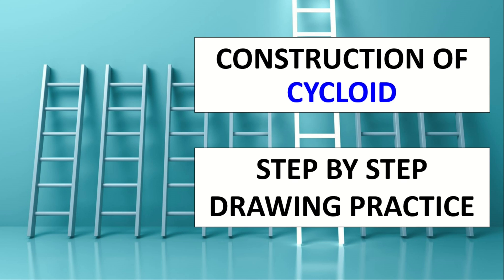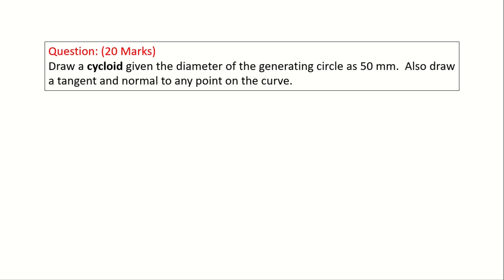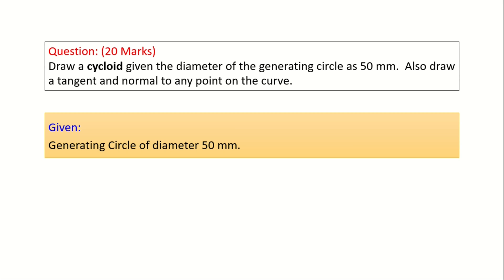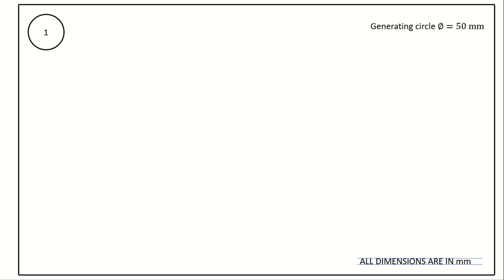Next, we will see how to construct a cycloid in step-by-step drawing practice. The question is: draw a cycloid given the diameter of the generating circle as 50 millimeter. Also, draw a tangent and normal to any point on the curve. Take an A3 sheet, draw margins on all four sides, write the question number. In the bottom right corner, write all dimensions are in millimeter. The given data is generating circle diameter equal to 50 millimeter.